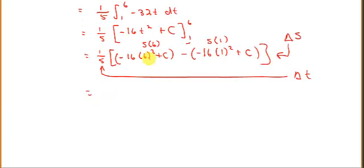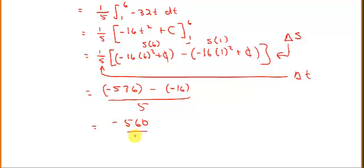Now let's see what this will be. This will be 36 times 16, which is negative 576, minus negative 16. The c's subtract off, and this is all over 5. That'll be negative 576 plus 16, which is negative 560 over 5, and that's negative 112 feet per second. So the average velocity is there.